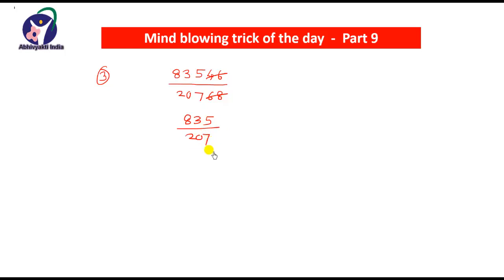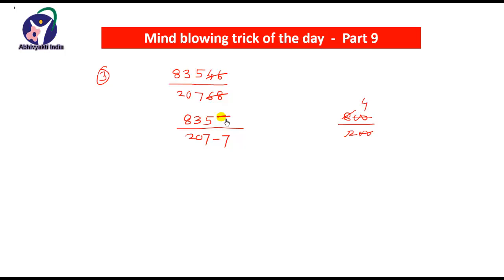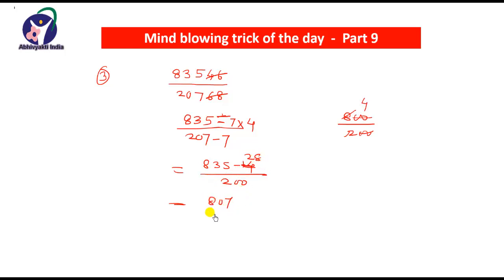Solve 835 divided by 207 as in the previous cases and the answer will be very very close to the full division. To round 207, we subtract 7 so it becomes 200. We round the numerator 835 to 800 and the denominator to 200 — two zeros cancel giving 4 into 8, so the proportion is approximately 4. We subtract 7 multiplied by 4 equals 28 from the numerator. So 835 minus 28 equals 807 divided by 200.